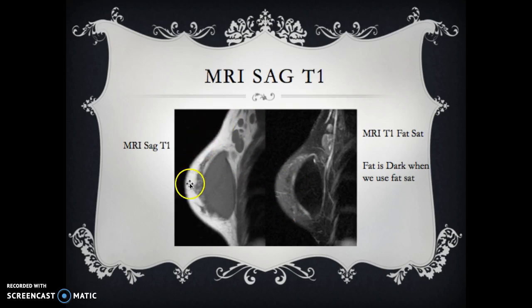When we're talking about fat sat, we say MRI sagittal T1 fat sat. This is an MRI sagittal T1 fat sat. The fat is dark. We saturate it so it's dark. That's your basics of MRI and CT.